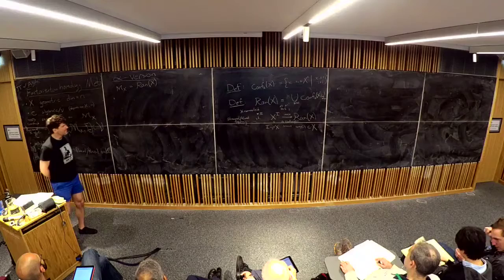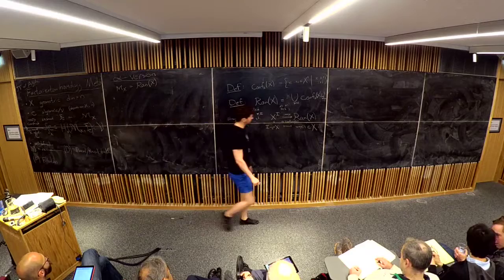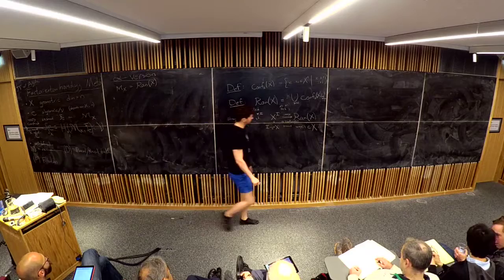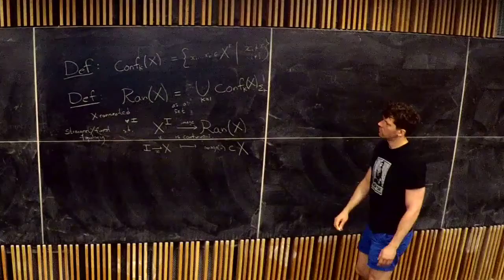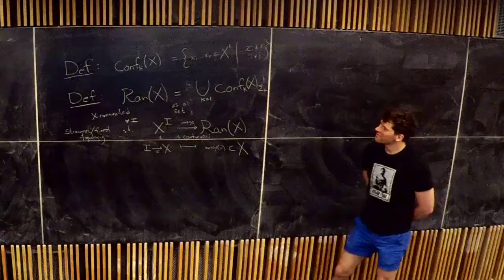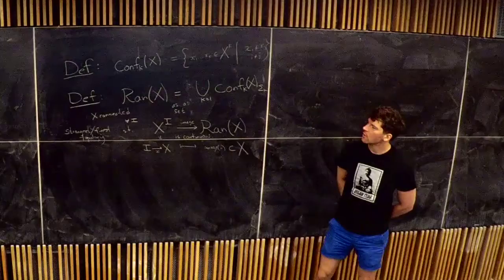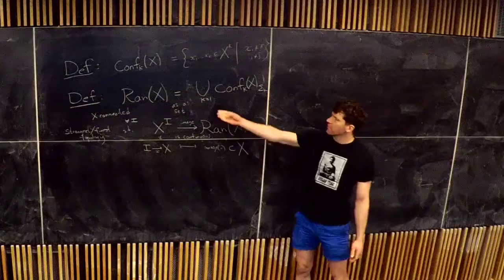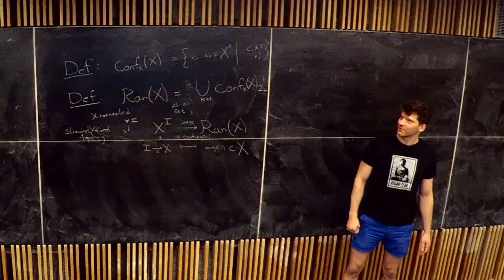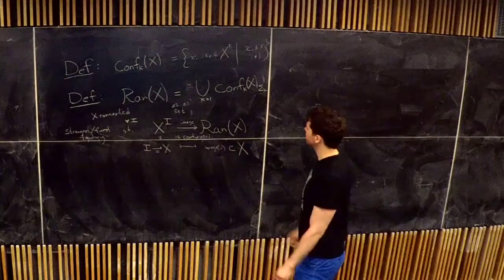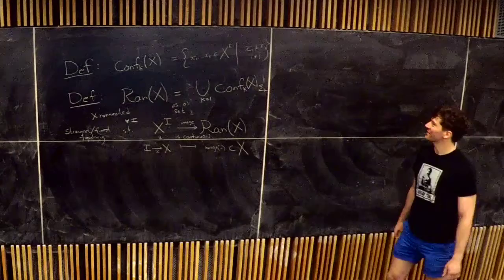The Ran space is contractible, so if you were interested in the homology of constant sheaves on it, that would be easy. However, the kinds of co-sheaves we're interested in will not be constant. Rather than thinking of it as contractible, you should think of it as filtered. As a filtered topological space, it is non-trivially filtered.